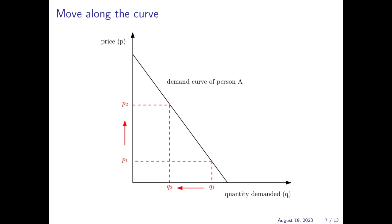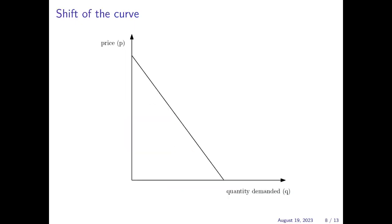So if the price changes, we get the movement along the curve. And this stands very much in contrast to what can happen when other things change. So, for example, the income level of the person. We have here again the demand function of person A. And now assume that income of person A increases.